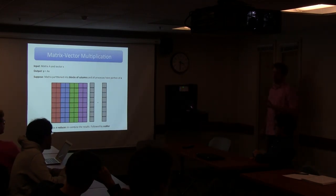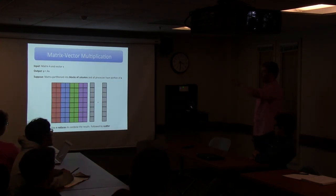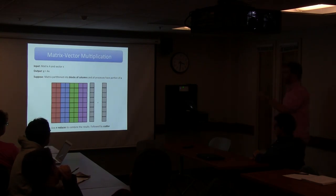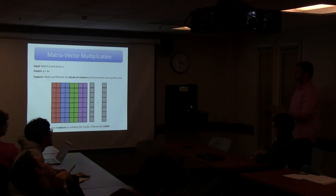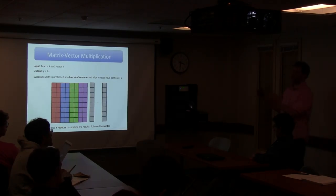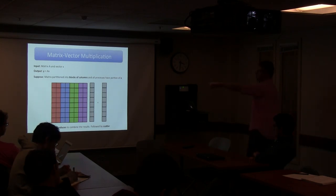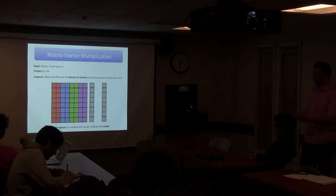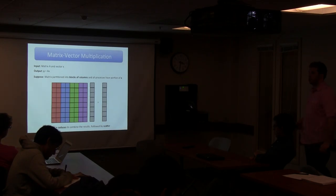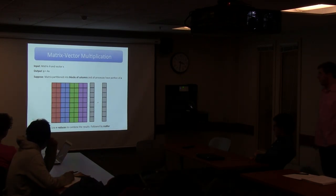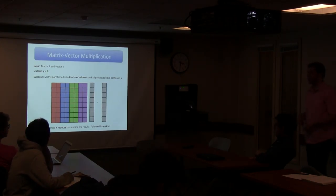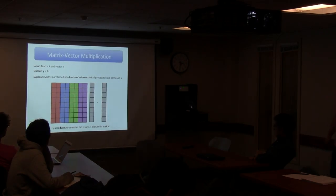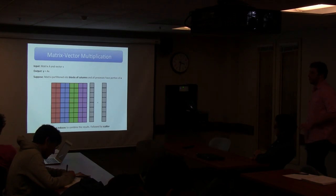Each processor does their local matrix-vector multiplies, but now they have a lot of little ones to do. In the other direction, the local work isn't the final answer - we have combination work to do. We basically have to reduce the results on every processor, one reduce for every row, then do a scatter to get the results back.